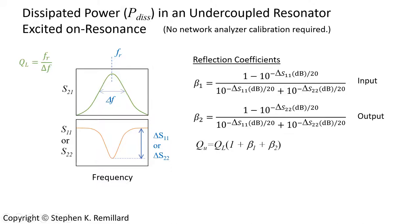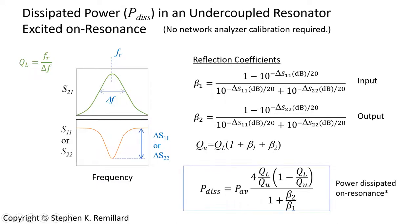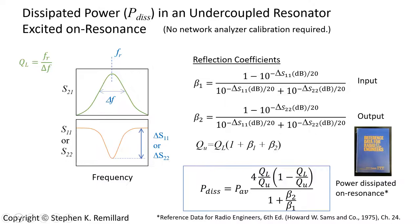The unloaded Q can be calculated from the coupling coefficients and the loaded Q. Given unloaded Q, loaded Q, and the coupling coefficients, the dissipated power on resonance can be computed with that equation that was long buried in the reference data for radio engineers handbook.